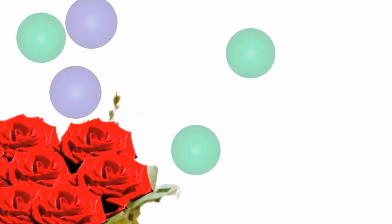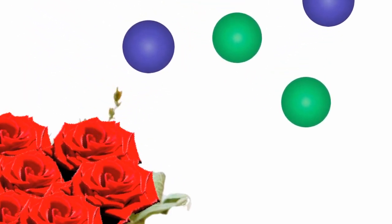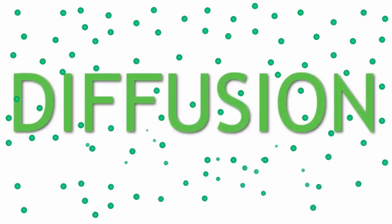This explains why it takes a while for a smell to get from one part of a room to another. The high concentration of gas, or smell, particles takes time to spread out due to the collisions with the other gas particles in the air. And that is diffusion.